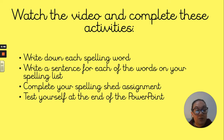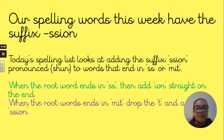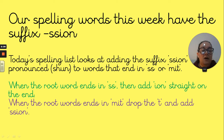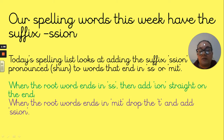So let's have a look at these words. Our spelling words this week all have the suffix 'shun'. You will notice that looks different to the spelling from last week, and as we look at these two different root word examples, it will show us why. Today's spelling list looks at adding the suffix 'shun', pronounced shun, to words that end in 'ss' or 'mit'.